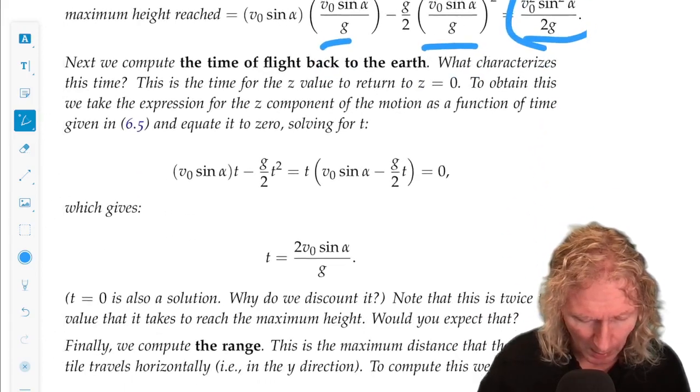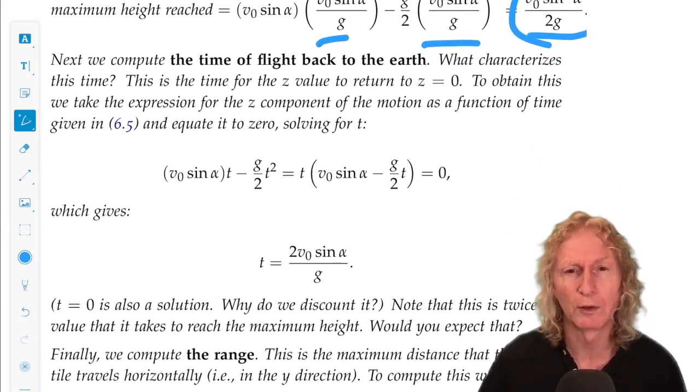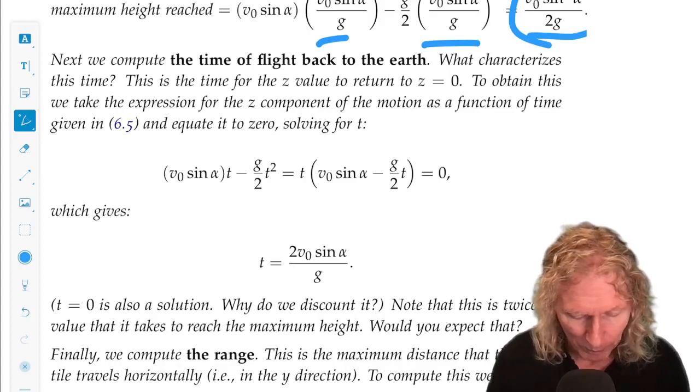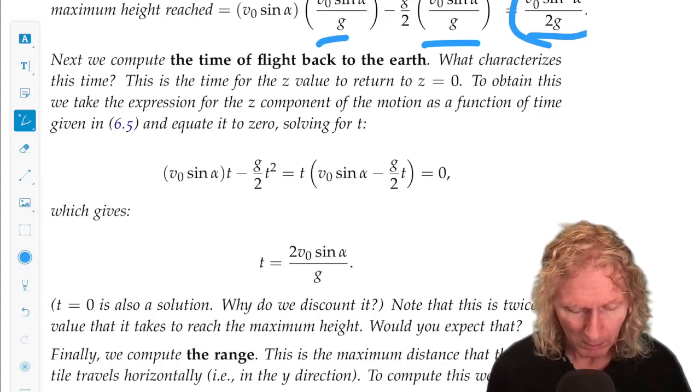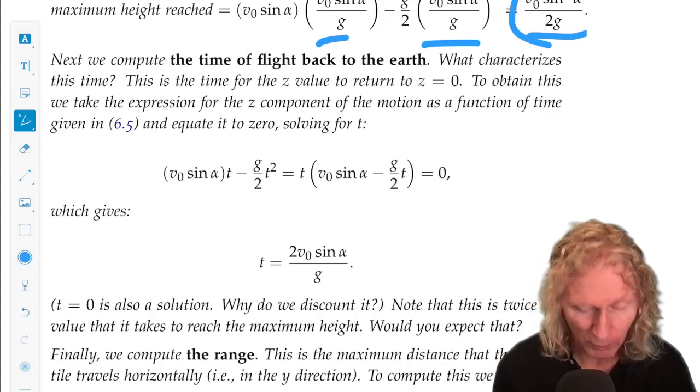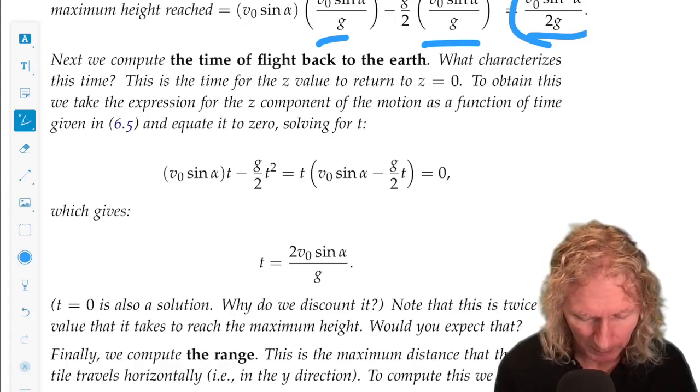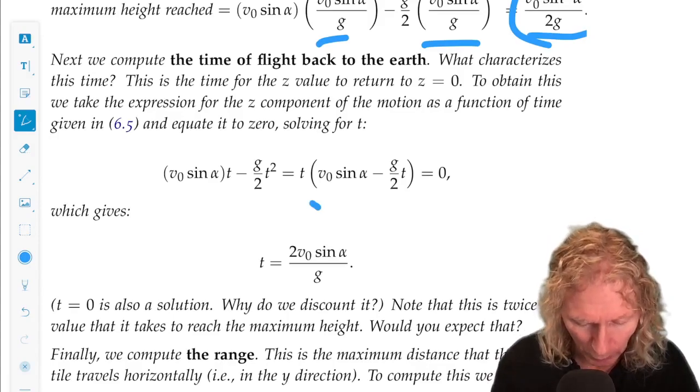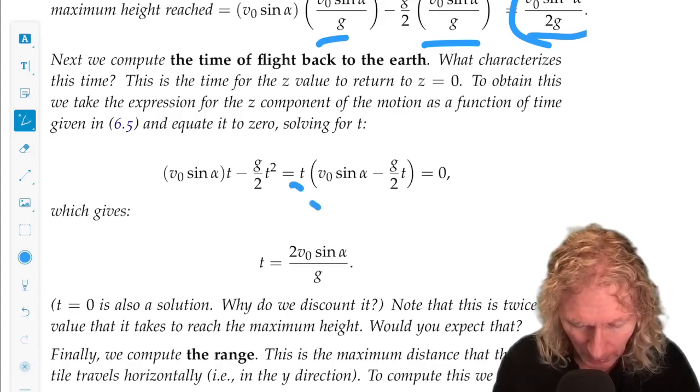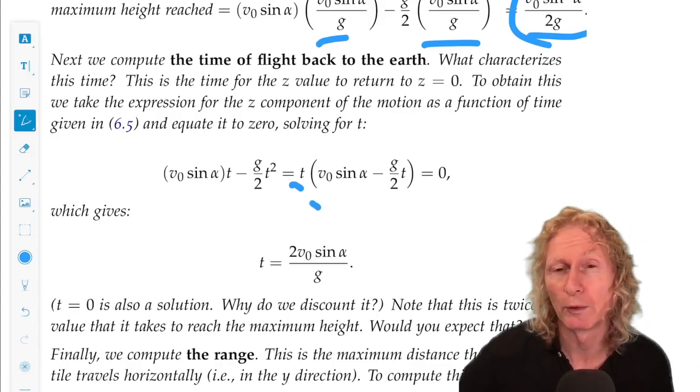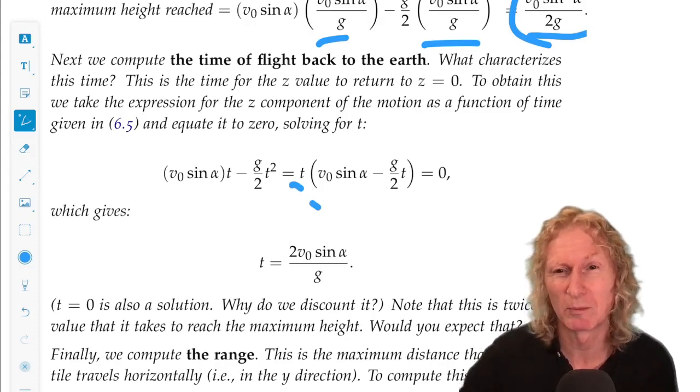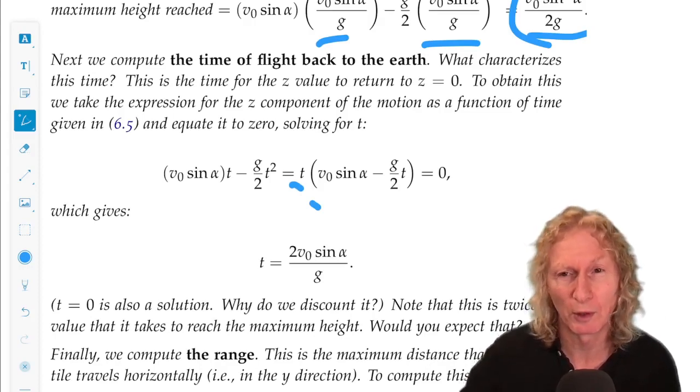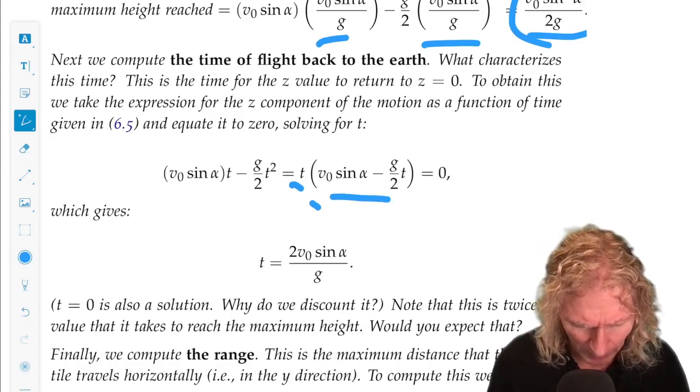Okay, now the time of flight back to the earth. It goes up, it goes down. We go to the position, vertical position as a function of time. We set that equal to zero. It goes up, it comes down. We get two solutions. It's quadratic. We can factor out the t. T equals zero is one solution. But that's just z equals zero. It starts at zero. And this is what we get.